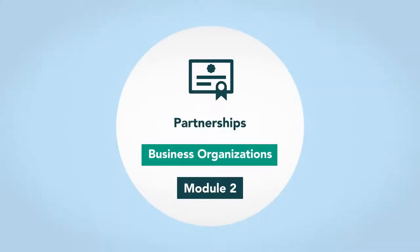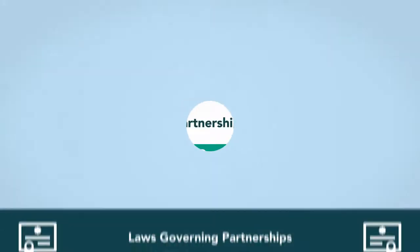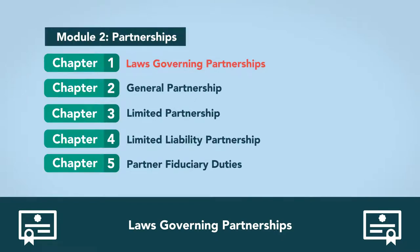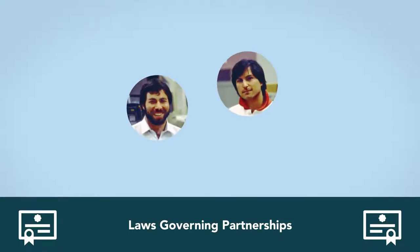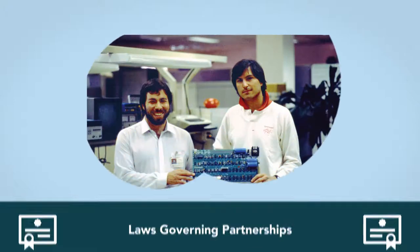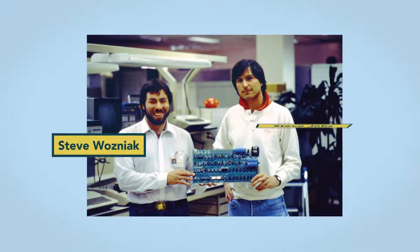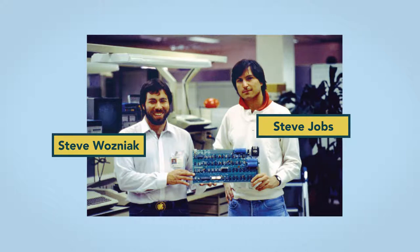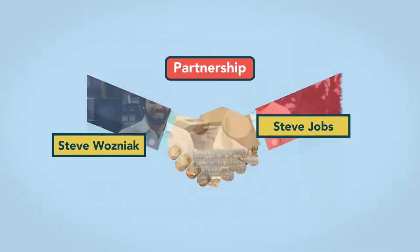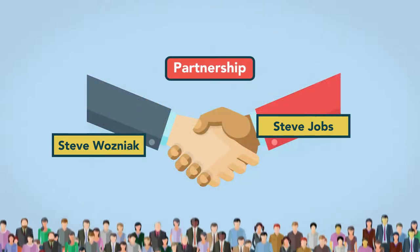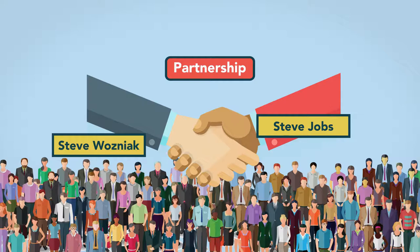Module 2: Partnerships. One was a master of analytics, while the other had an unrivaled business foresight. Together, Apple co-founders Steve Wozniak and Steve Jobs formed one of the most successful business partnerships in the history of the United States. By choosing to form their business as a partnership, Wozniak and Jobs followed the path of millions of entrepreneurs before them.